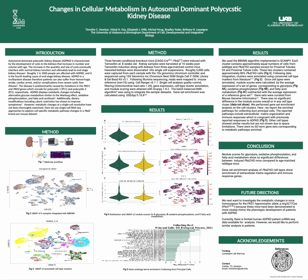To conduct this experiment, three female conditional knockout mice were induced with tamoxifen at eight weeks of age. Kidney samples were harvested at 16 weeks post-tamoxifen induction along with kidneys from three age-matched control mice. Harvested kidneys were dissociated into single cell suspensions and roughly 5,000 cells were captured from each sample with the 10x Genomics Chromium Controller.